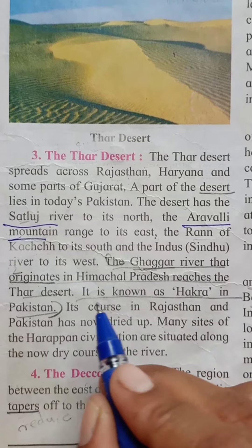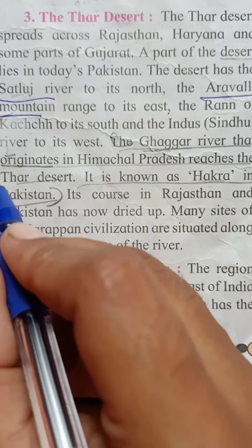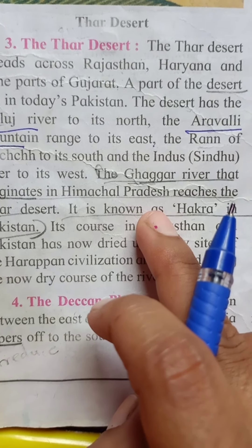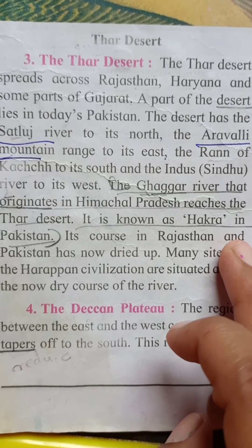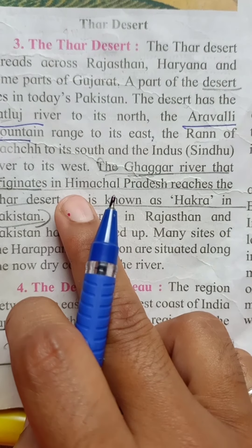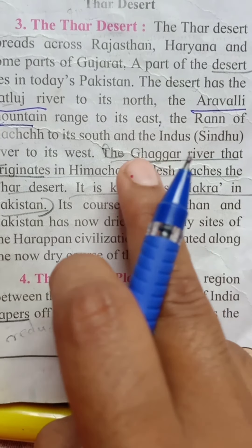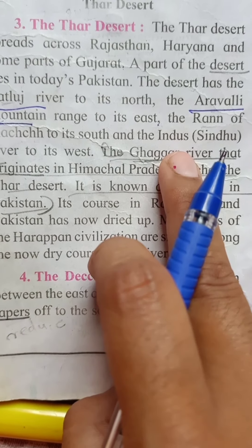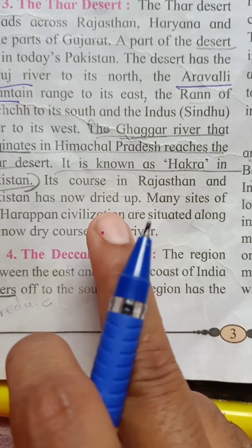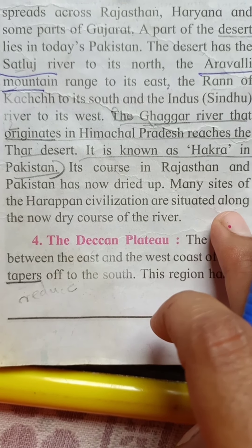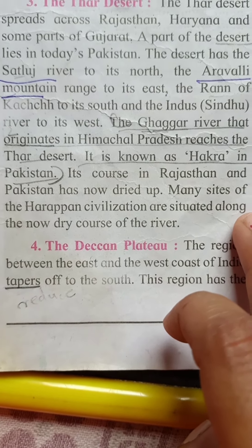There is a river named Ghaggar — underline this — which originates in Himachal Pradesh and reaches to the Thar Desert. In Pakistan, this river is known as Hakara. In the course of Rajasthan and Pakistan, this river has now dried up. Many sites of Harappan civilization are situated along the now-dry course of this river.